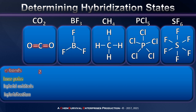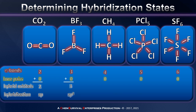Starting with sigma bonds: carbon dioxide has two, because those double bonds each count as only one sigma bond plus a pi bond. Boron trifluoride has three, and methane has four. You'll notice that none of these compounds has any lone pairs, making the counting very simple. For carbon dioxide — two sigma bonds and no lone pairs — we get an SP hybridization: two hybrid orbitals out means we put two atomic orbitals in. For boron trifluoride, three hybrid orbitals gives SP2, using one s and two p orbitals.